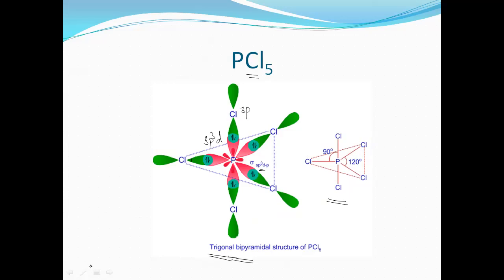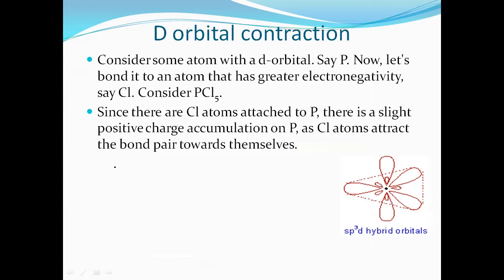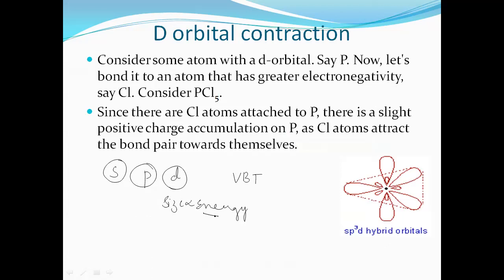According to Valence Bond theory, only orbitals of almost the same energy can participate in hybridization. However, d orbitals have higher energy than s and p orbitals because their size — and hence radius — is larger, and size is directly proportional to energy. So the d orbital energy is much greater than s and p, raising the question: how can they hybridize if their energies don't match?